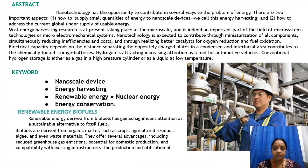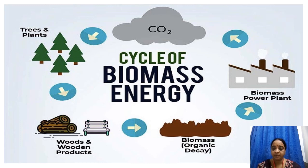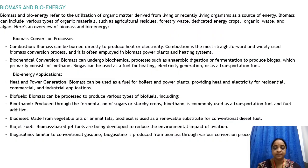Let us look at the cycle of biomass energy. Starting from carbon dioxide, it is taken up by trees and plants and given to woods and wooden products. Then biomass organic decay happens, followed by a biomass power plant where pyrolysis occurs. The emissions are segregated and CO2 is again used to complete the cycle of biomass energy.